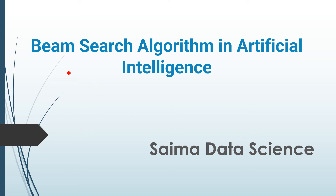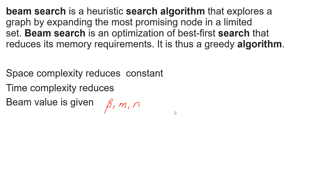In this lesson I will explain the concept of the beam search algorithm in artificial intelligence. Beam search is a heuristic search algorithm — heuristic means estimate, meaning we already have some information in advance about how to reach our goal state. Beam search explores a graph by expanding the most promising node in a limited set, where a more promising node is one whose heuristic value is less compared to other nodes.